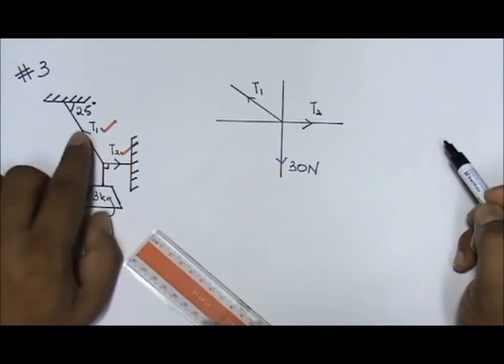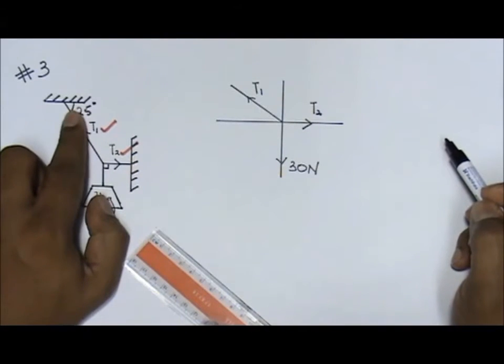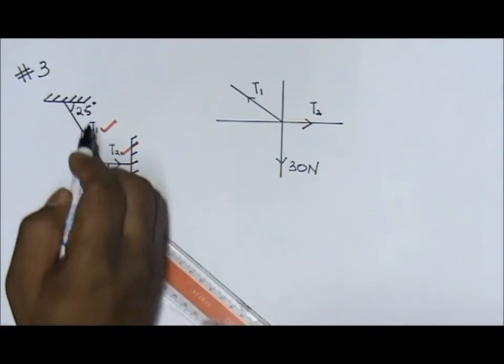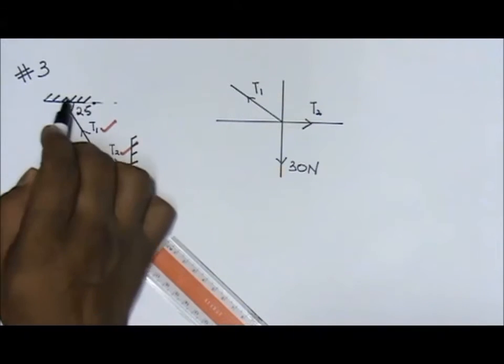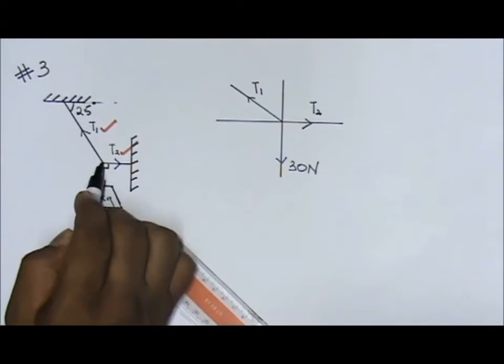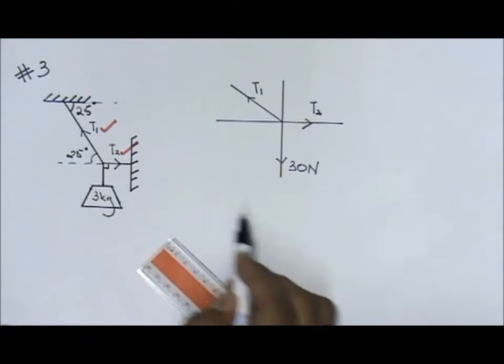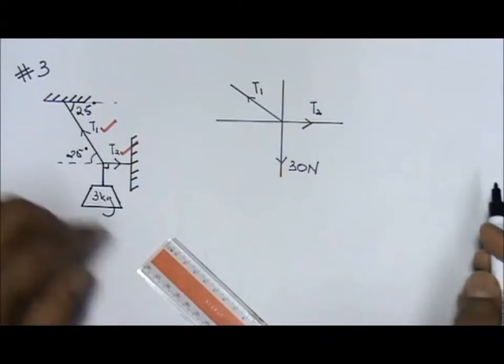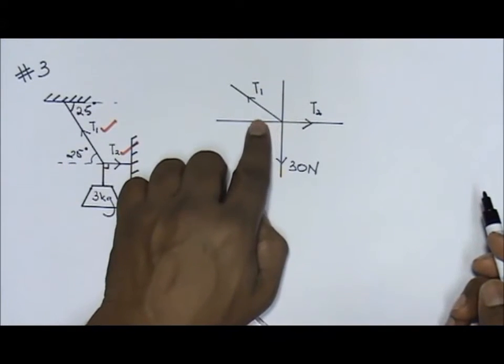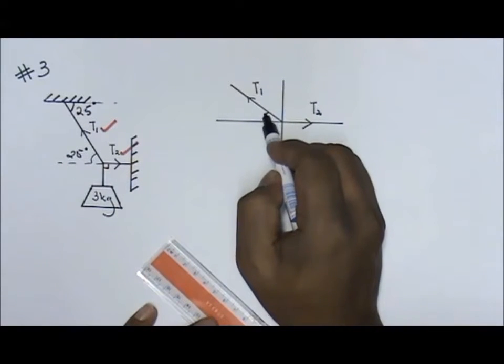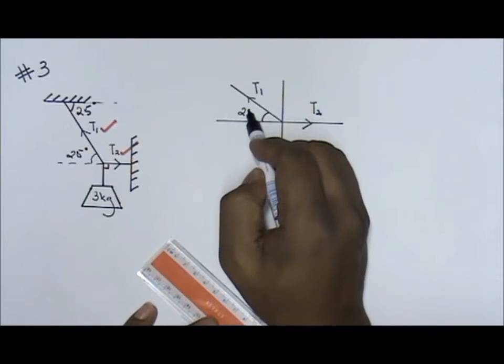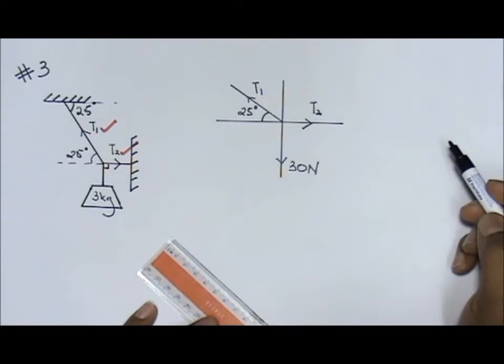Now, next, the angle. If you see this, this is 25 degrees. So, using your Z in mathematics, you will get this to also be 25 degrees. So that means if I transfer this one 25, it will be inside here. So, this is 25 degrees.